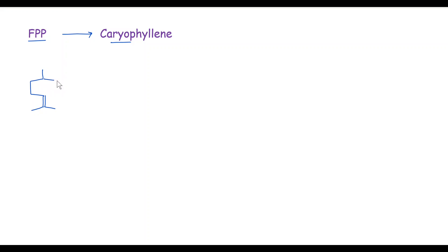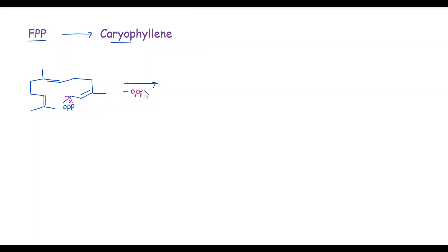First, we will see the biogenesis of caryophyllene from FPP. The first structure is FPP. In the first step, loss of OPP takes place from FPP, and we get a farnesyl cation, which is known as the farnesyl cation.